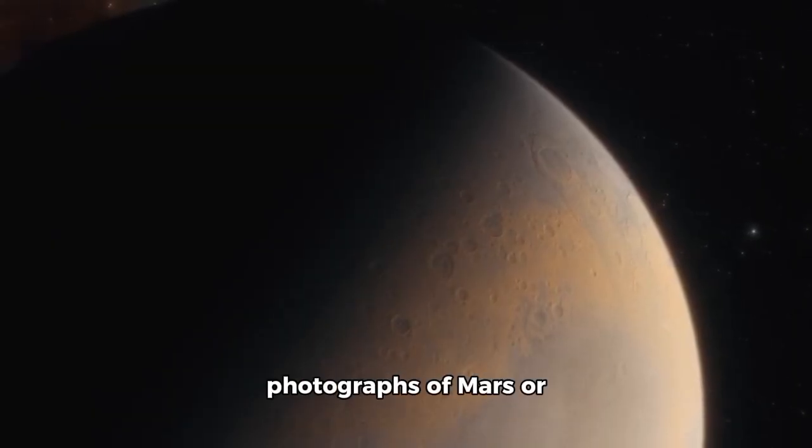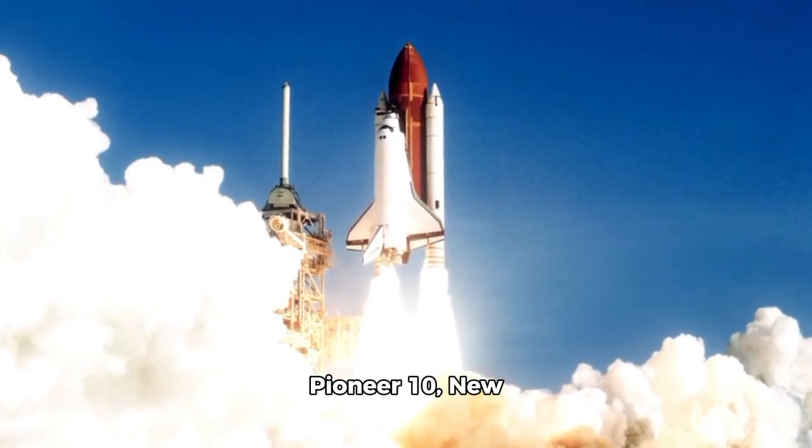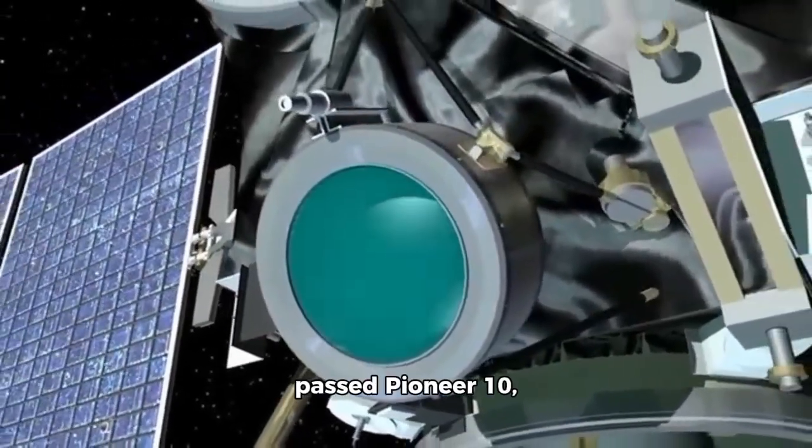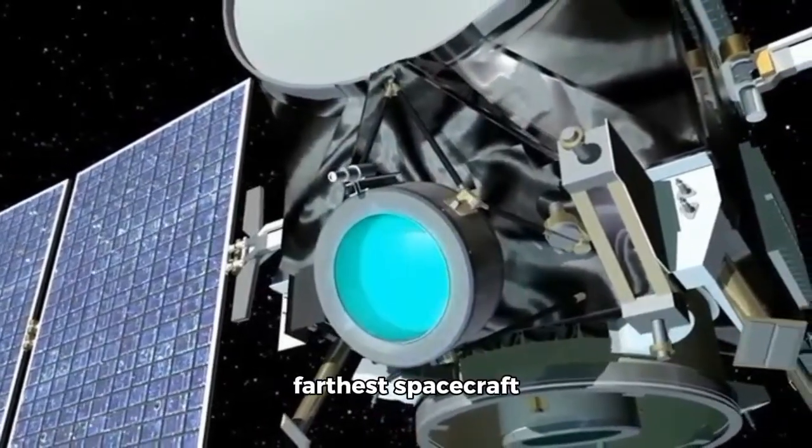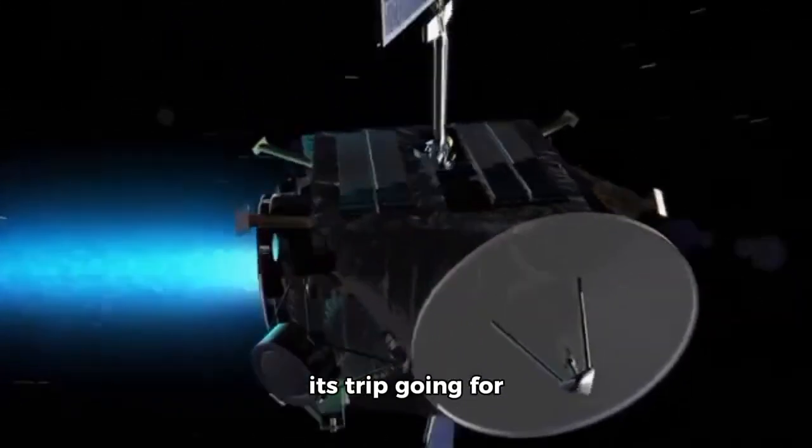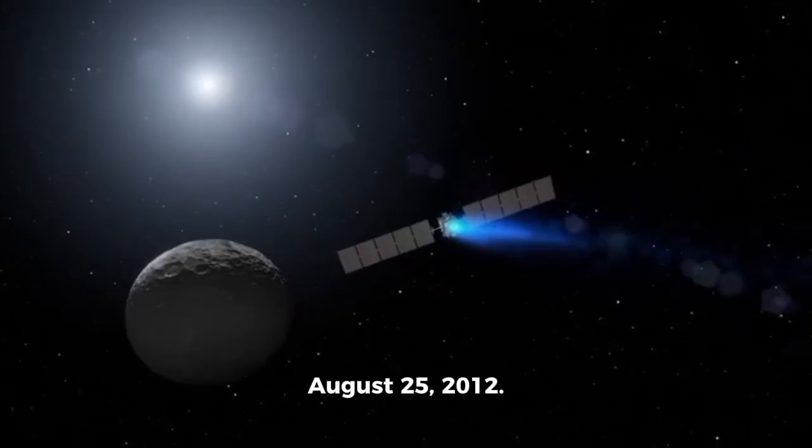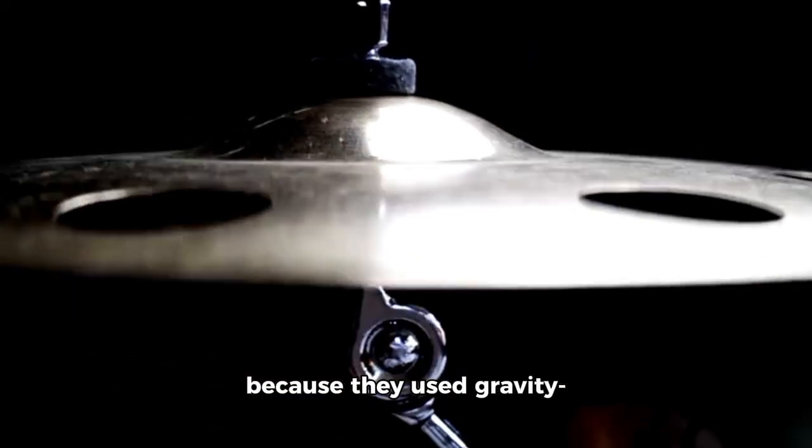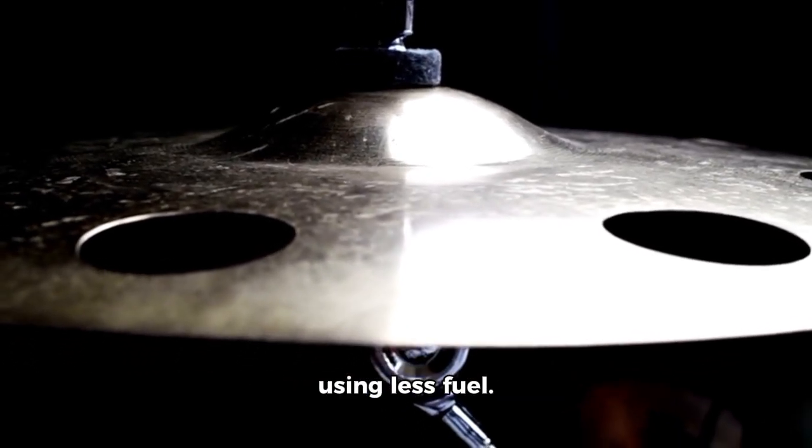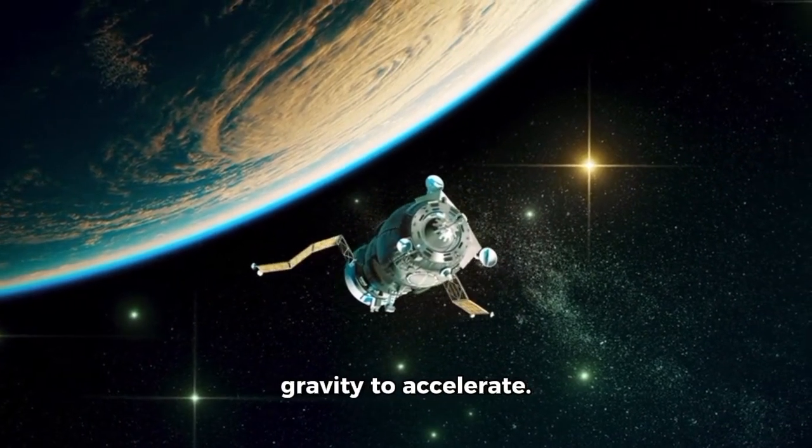As the spacecraft continued to move, they were eventually powered down to conserve energy prior to beginning their journey into interstellar space. On February 17, 1998, Voyager 1 passed Pioneer 10, becoming the farthest spacecraft launched from Earth. However, Voyager 1 kept its trip going for another 14 years before finally entering interstellar space on August 25, 2012. The Voyager missions worked because they used gravity-assisted maneuvers to push the spacecraft to where they needed to go while using less fuel.